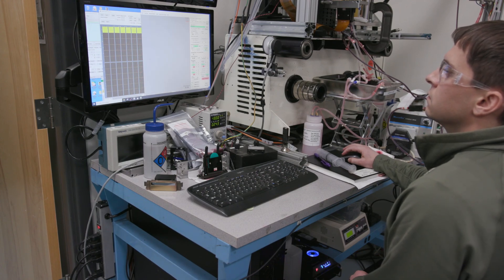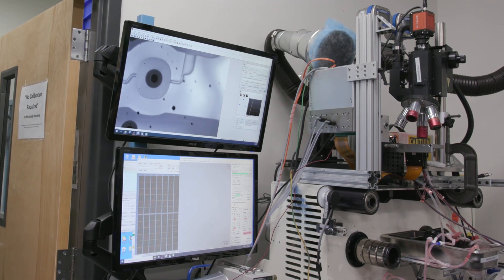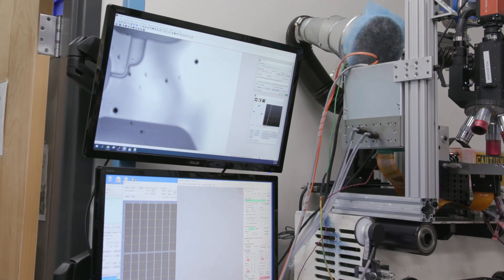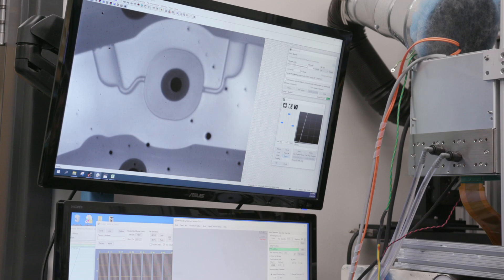Ideally, what ends up on the substrate will look identical to the image that was created on the computer. If this result is not achieved, printhead test lab engineering technicians can troubleshoot by using an infrared camera to examine some internal features of the printhead.